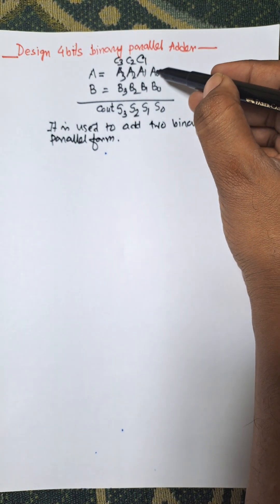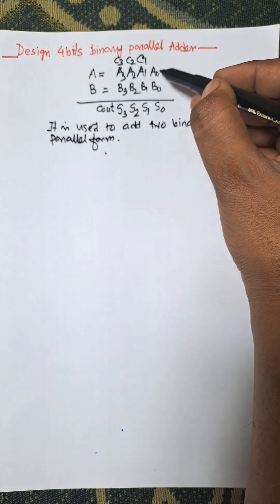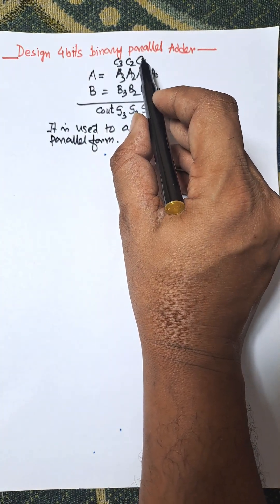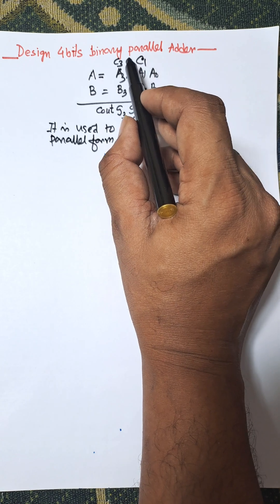Look at this: A0 and B0 are added together, that means we need a half adder. Then here there are three stages, so we need full adder, full adder, full adder. So we need three full adders and one half adder.